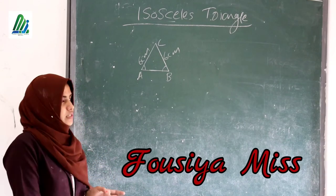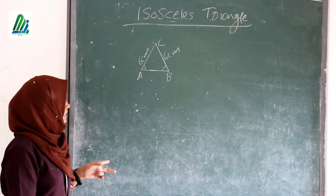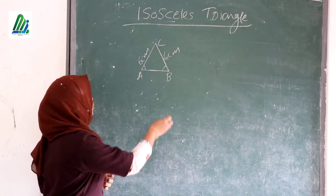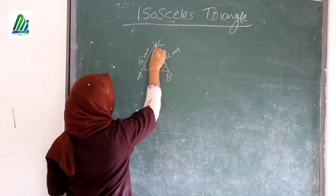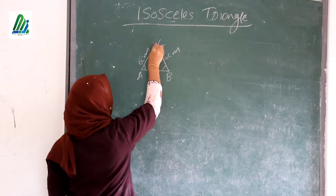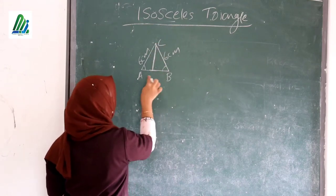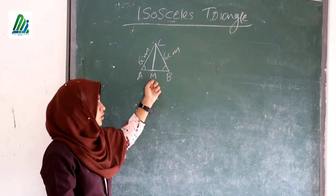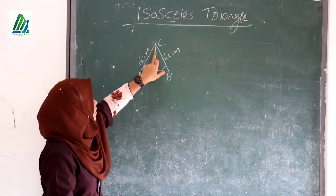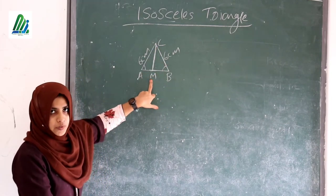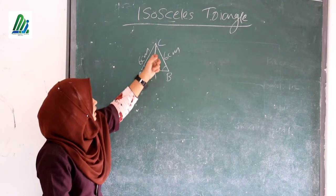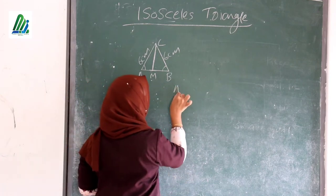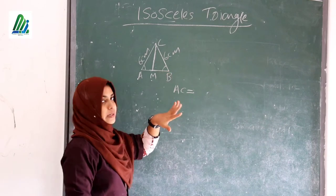Today we are going to learn about isosceles triangles. Look at triangle ABC here — the side AC is 6cm and the side BC is 6cm. We join corner C to the side AB, and we get CM, where M is the midpoint of side AB. When we join corner C to the midpoint M of AB, we get two triangles: AMC and BMC.